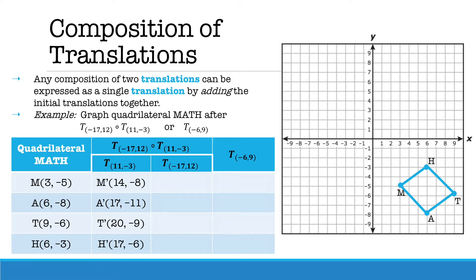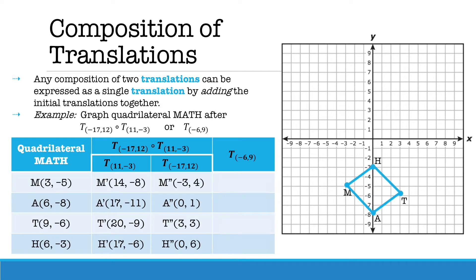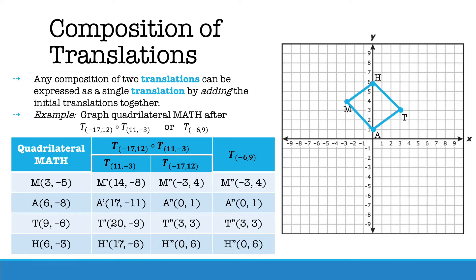If we first perform the translation of (11, -3), we get the prime image for quadrilateral MATH, then following with the translation of (-17, 12) to get MATH double prime. 11 minus 17 gives you negative 6, and negative 3 plus 12 gives you positive 9. So if we perform the single translation of moving left 6 units and up 9 units, our image will be the same as performing the two translations separately.